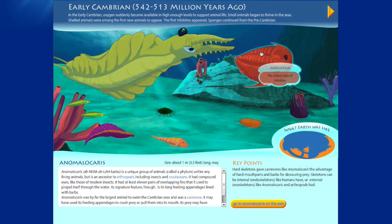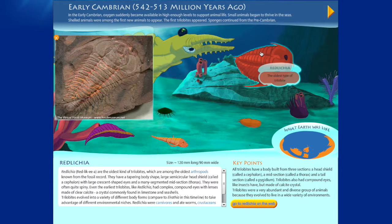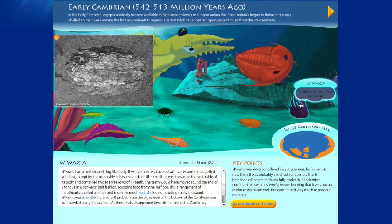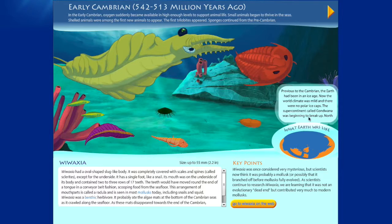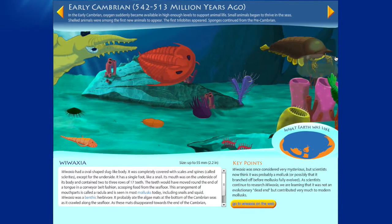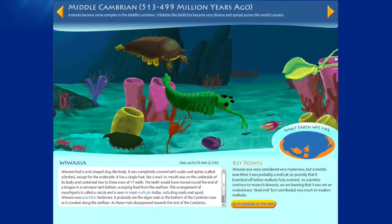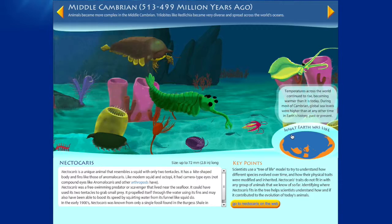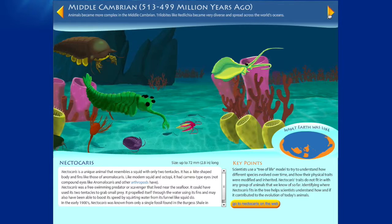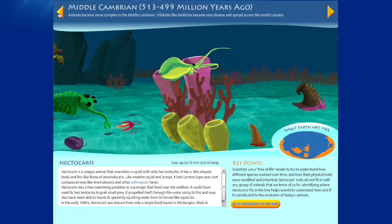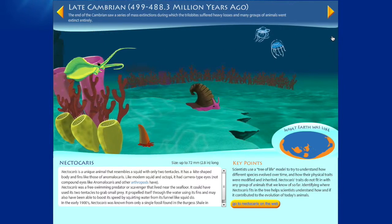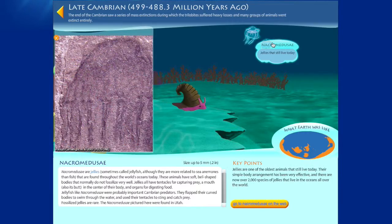By hovering over each one, we can see their name. By clicking on them, we can view more information about them, as well as a fossil photo. Moving the mouse at the edges of the screen, we can scroll backwards and forwards in time to the middle Cambrian and all the way to the late Cambrian. We can also navigate using these orange navigational buttons. The entire timeline is animated with parallax scrolling, and each of the animals are animated as well.